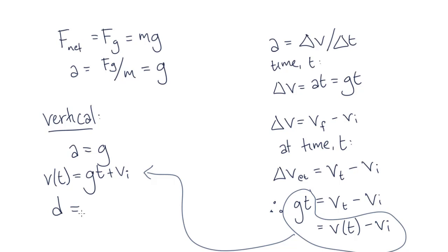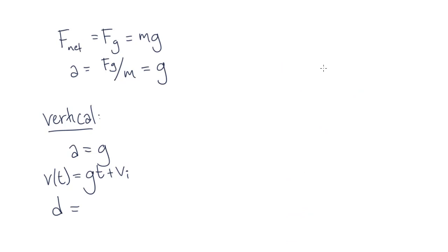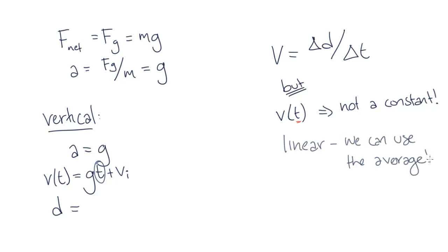So what is our vertical displacement? To find this, we can relate our velocity with our displacement, so v is equal to the change in displacement over the change in time. However, we know that our velocity is dependent on t. It is not a constant. However, we do know that our velocity has a constant acceleration, and so because our velocity is constantly increasing, we can look at the average between the velocity at two moments in time.